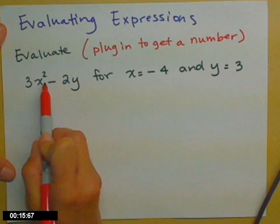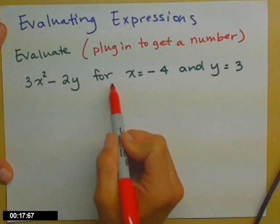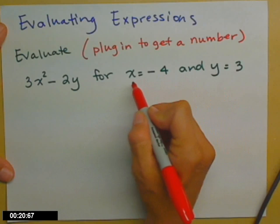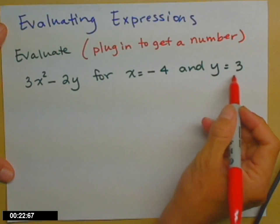So here's my expression, 3x² minus 2y, and then I have to be told what to plug in. So x equals negative 4 and y equals 3.